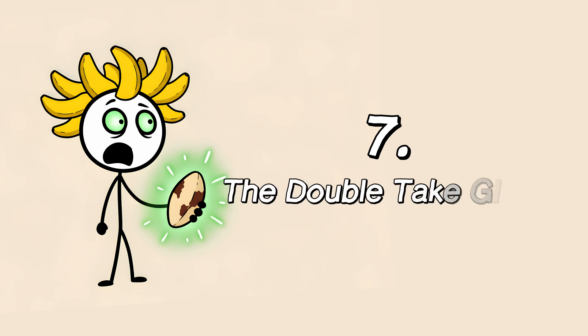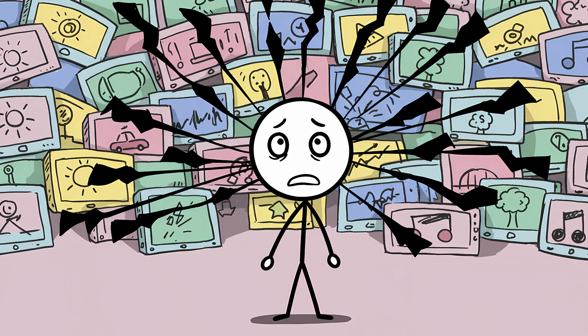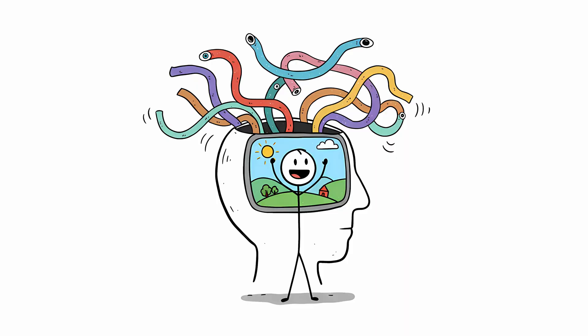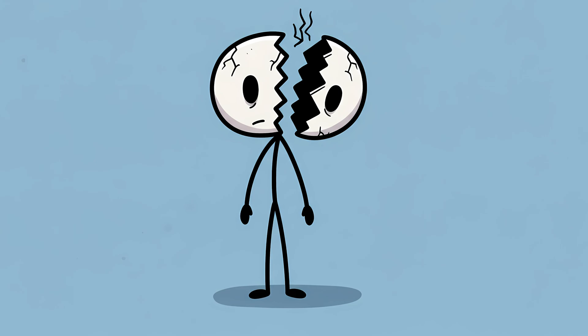Number seven, the double-take glitch. Your brain is constantly absorbing information from your senses at a ridiculous speed. It's like you're watching dozens of high-definition video feeds at once. Usually, it stitches all this information together into one seamless, coherent experience of reality. But what if one of those feeds buffered for just a moment? This is the core of the split perception theory.